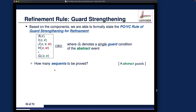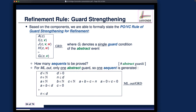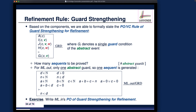Just remember: if the number of abstract guards changes for any abstract event, the number of sequents generated for the guard strengthening proof obligation will change as well. Please do the exercise before moving on. Starting from the next part, we'll try to discharge — to prove — the two sequents related to the guard strengthening proof obligation.